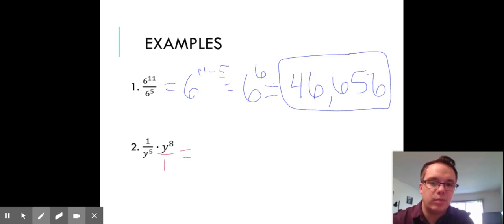So numerator times numerator, I'm going to get y^8. Denominator, y^5 times 1 is y^5.